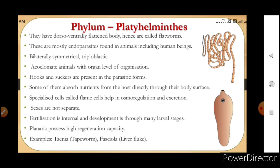These animals are found in many animals including human beings. They show bilateral symmetry — when their body is divided in only one plane, we see two equal halves. Only in one plane do they show two equal halves. These are triploblastic animals.